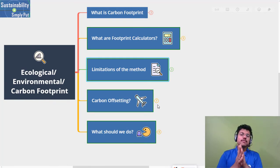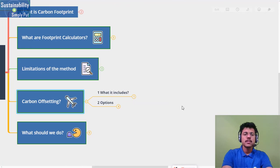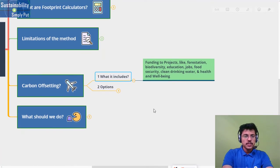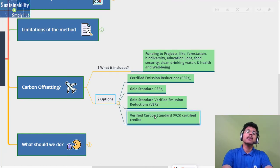But before that, one common feature from all these calculators is carbon offsetting. You can buy some carbon credits. What it includes - whenever you buy carbon offsetting, you are funding projects which are working on like tree plantation, forestation, biodiversity conservation, education, jobs, clean water, or health and well-being of the people. There are many options you can see on these calculators. Either they will take you to some projects, or they will take you directly for funding where you can directly donate, or they will take you to carbon offsetting options like Certified Emission Reductions (CERs), Gold Standard CERs, Verified Emission Reductions (VERs), or Verified Carbon Standards (VCS). These are the different carbon credits or carbon offsetting options that you can go for.